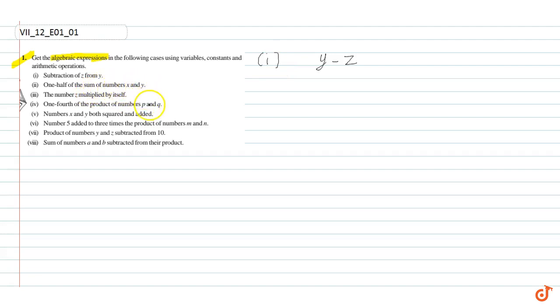Part two: one half of the sum of numbers x and y. How can we get the sum of numbers? x plus y is the sum. So one half of the sum of numbers x and y is (x+y)/2.